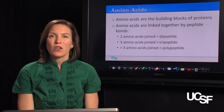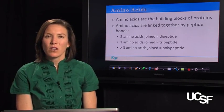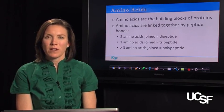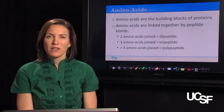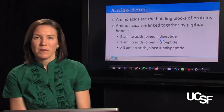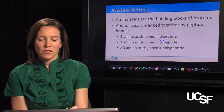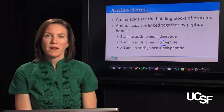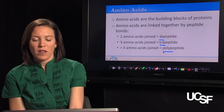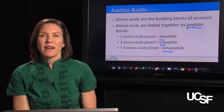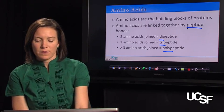Amino acids are the building blocks of protein, and they are linked together by what are called peptide bonds. If you have two amino acids joined together, that's a dipeptide. Three amino acids joined together is a tripeptide. And more than three is what's called a polypeptide.